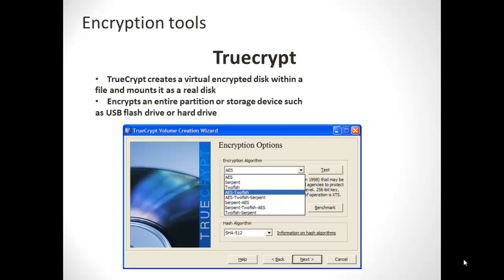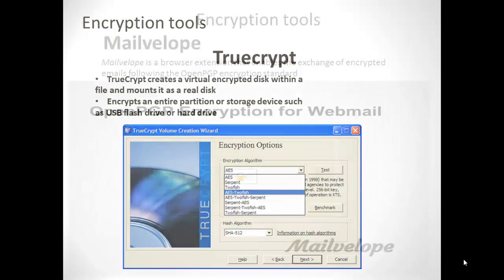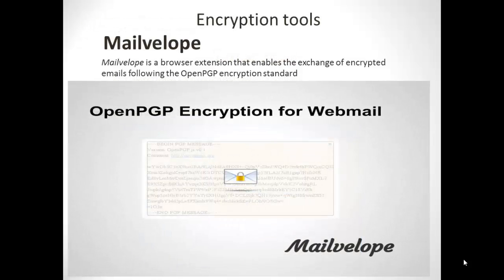Now let's look at some encryption tools you can use for securing your data. The first tool is TrueCrypt, an open source application that is free and legal. It has the ability to encrypt hard drives and flash drives, and you can generate encrypted volumes by creating encrypted file containers. The second encryption tool is Melvella, which you can use for encrypted online communication via emails. Melvella is based on OpenPGP encryption. That's all for this video — have a nice day.